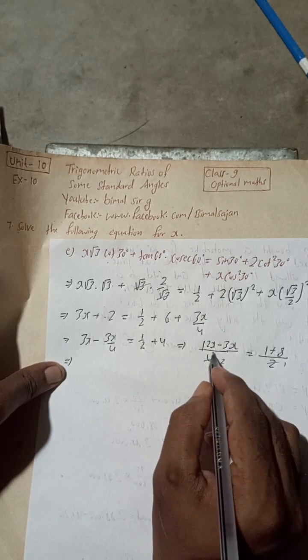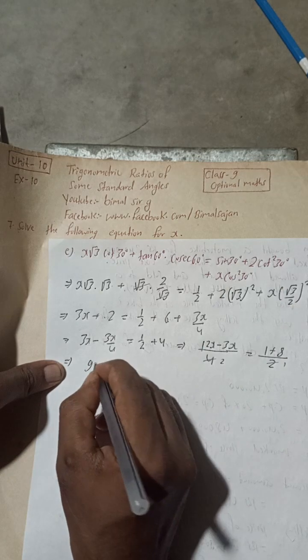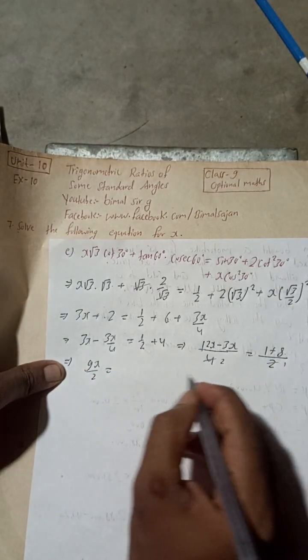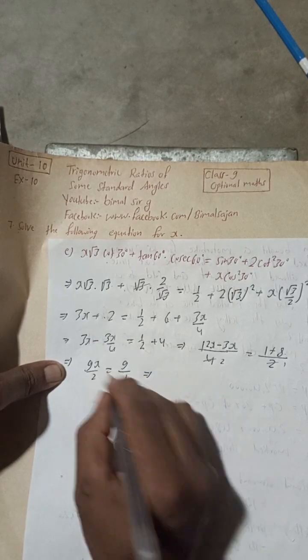So this implies, how much is there? This is 12x minus 3x, which will be 9x by 4 is equal to 1, and here this is 9 by 2.